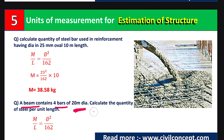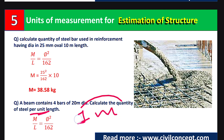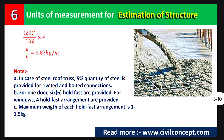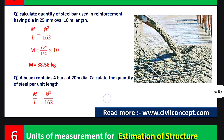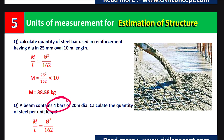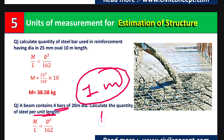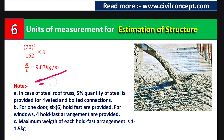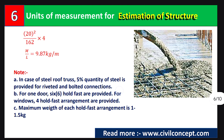Another example: a beam contains four bars of 20 mm diameter. Calculate the quantity of steel bars per unit length (1 meter). Using the formula: W = (20² / 162) × 1 meter × 4 bars = 4 meters total length. The calculation gives approximately 9.87 kg per meter. This is the steel quantity per meter length for the four bars.